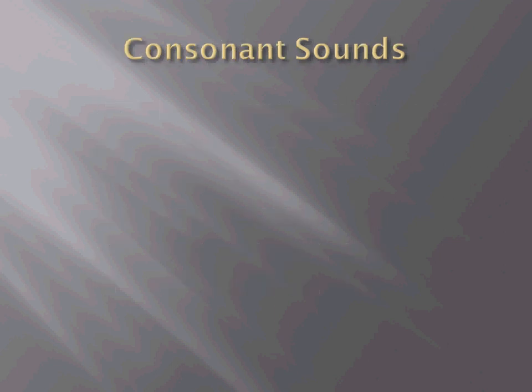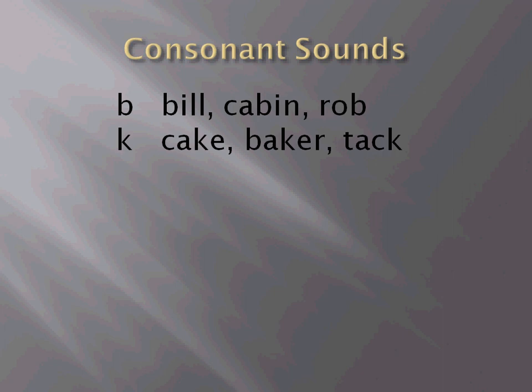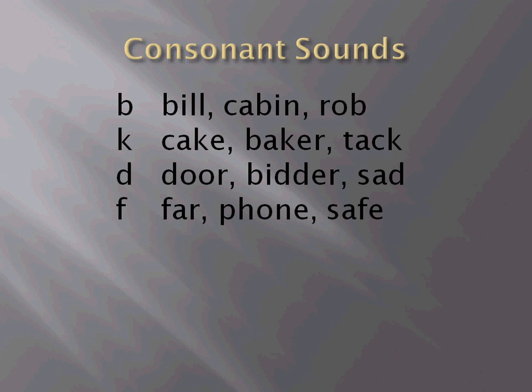Now we're going to look at the consonant sounds. B: Bill, Cabin, Rob. C: Cake, Baker, Tack. D: Door, Bitter, Sad. F: Far, Phone, Safe. G: Gas, Agree, Bag.